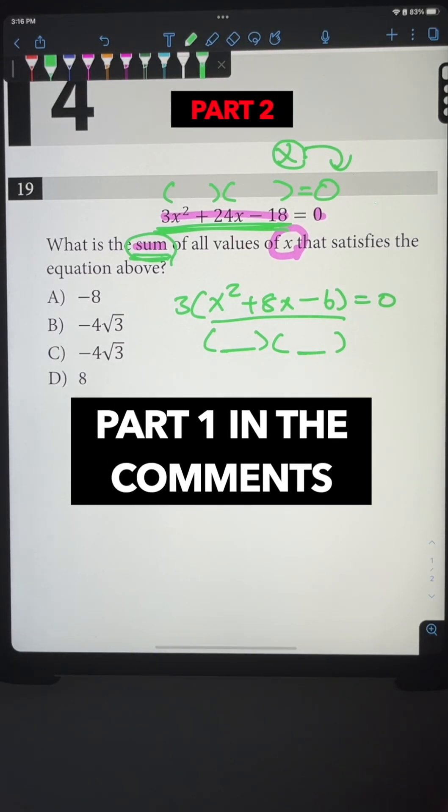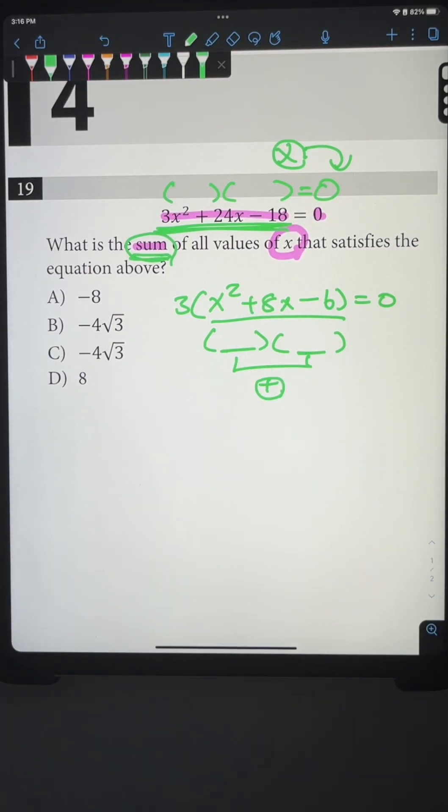They're not asking you to find this value or that value. They're specifically asking for the sum of both of these values, and this is a popular pattern on the SAT.